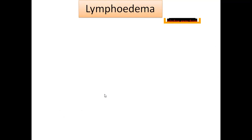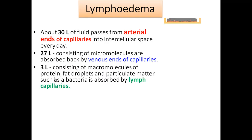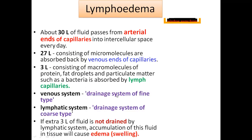About 30 litres of fluid passes from the arterial end of capillaries into intercellular spaces every day. 27 litres of it is absorbed back into the heart by the venous end of capillaries. 3 litres, consisting of macromolecules of protein, fat droplets, and particulate matter such as bacteria, is absorbed by lymph capillaries. So the venous system is a fine-type drainage system, and the lymphatic system is a coarse-type drainage system — large macromolecules are also collected and sent back to the venous system. The lymphatic system transports 3 litres of fluid to the heart via the venous system.